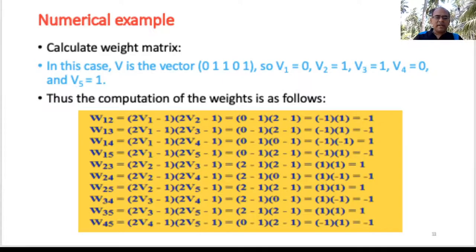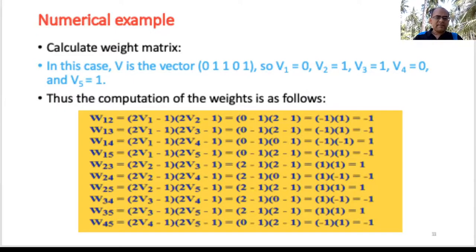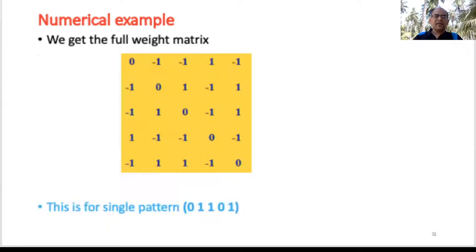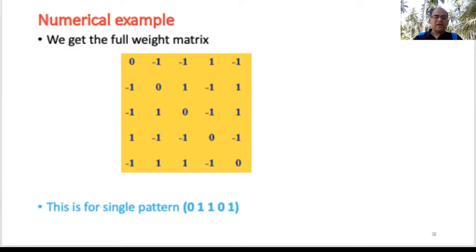To compute the weights: for example, w_12 = [2·v1 − 1]·[2·v2 − 1]. Substituting, you get −1. Similarly compute all other entries. After computing all entries, you get the full weight matrix for the single pattern [0, 1, 1, 0, 1]. The process is straightforward substitution — a very simple operation.